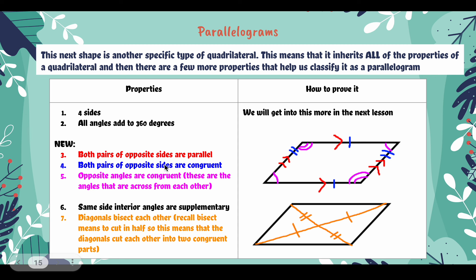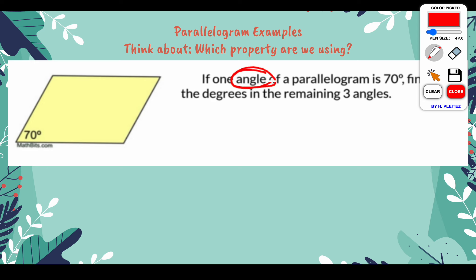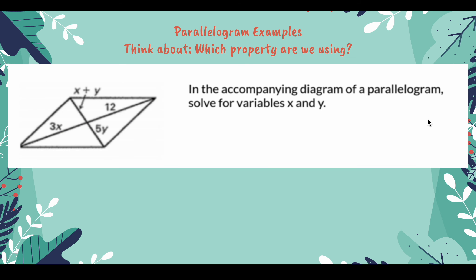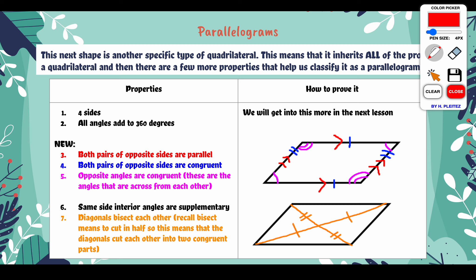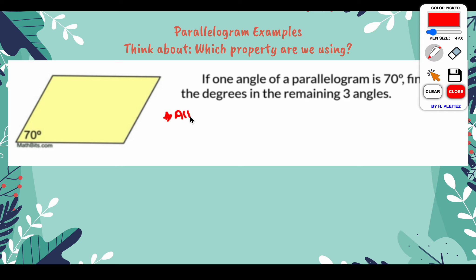Now we're going to get into two examples, done on your note sheets — not in your flipbooks. If one angle of a parallelogram is 70 degrees, find the degrees in the remaining three angles. To solve this, keep your flipbook open to parallelograms. Since we're dealing with angles, I know I'm going to use: all angles add to 360 degrees, and opposite angles are congruent — those are the two relevant properties here.